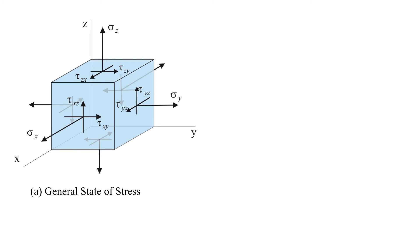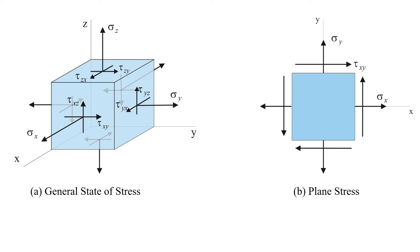In Chapter 1, it was shown that the general state of stress can be characterized by six normal and shear stress components: sigma x, sigma y, sigma z, tau xy, tau xz, and tau yz. However, in engineering practice, the state of stress is often represented as a single plane by a 2D element as shown here. This state of stress is referred to as plane stress.